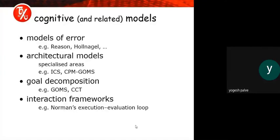Cognitive and related models include: model of error, architecture model, goal decomposition, and interaction frameworks. For the model of error, we take the example of Reason's model. For the architecture model, examples include ICS and CPM-GOMS. For goal decomposition, examples are GOMS and CCT. For interaction frameworks, the best example is the normal execution-evaluation loop.